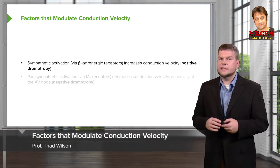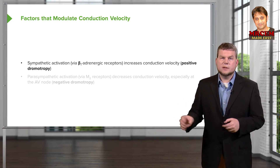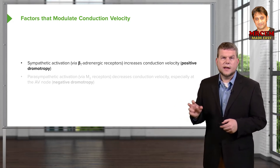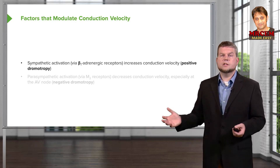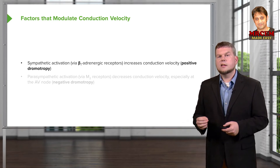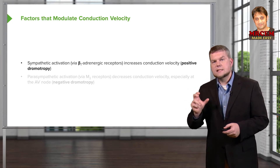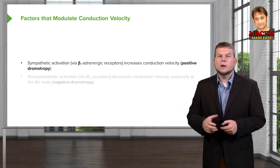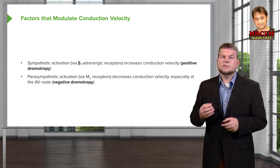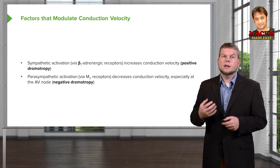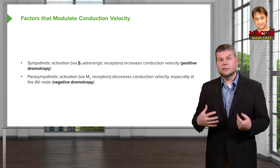There are a couple of factors that affect conduction velocity. The first is sympathetic stimulation — this fight-or-flight response allows for faster conduction of current, which we call positive dromotropy. Dromotropy refers to the speed of conduction. What slows down conduction speed is the parasympathetic nervous system, acting through acetylcholine. This decreases conduction through places like the AV node, and we call that negative dromotropy.